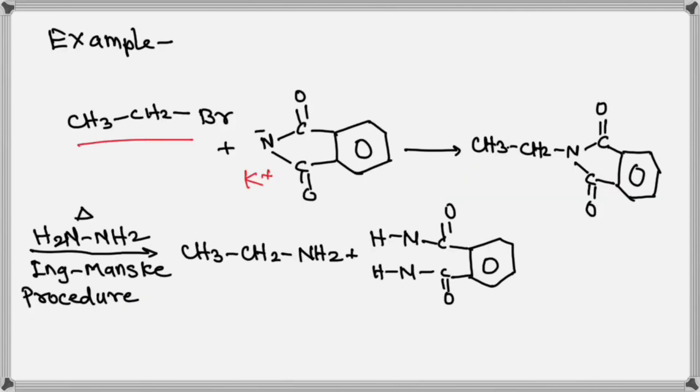For example, ethyl bromide when treated with potassium salt of phthalimide in presence of DMF, it produces N-ethyl phthalimide.